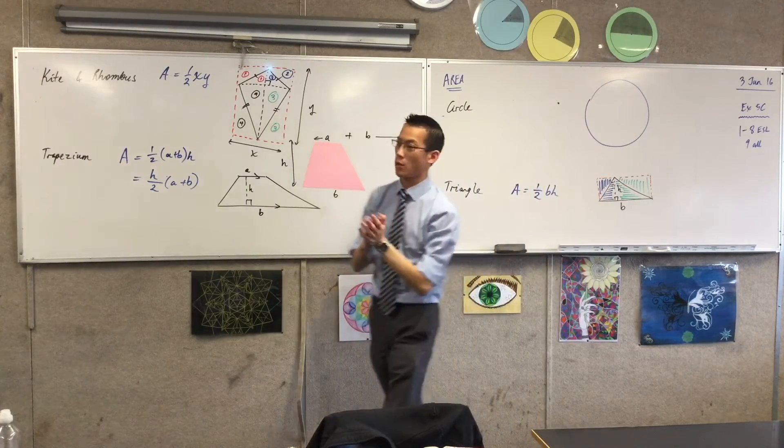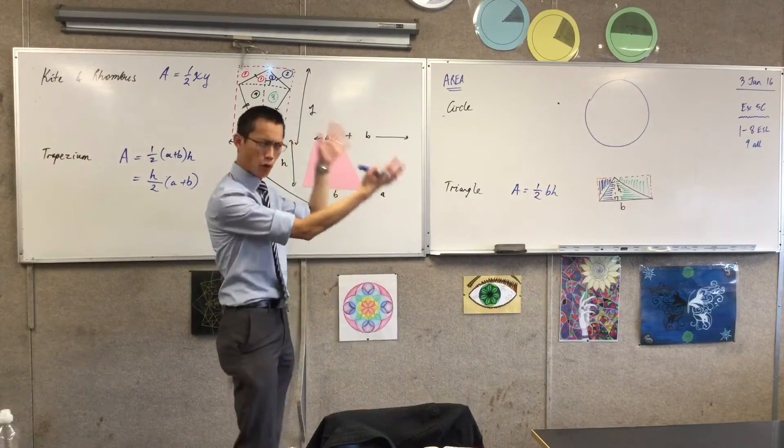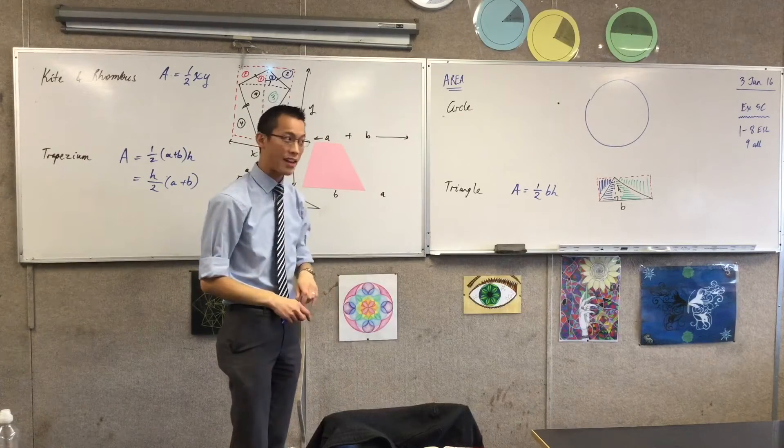And that's why when we were doing perimeter, circumference, we had a special formula for the area of a circle, right? So he played a different game.